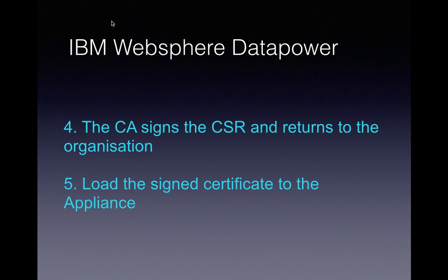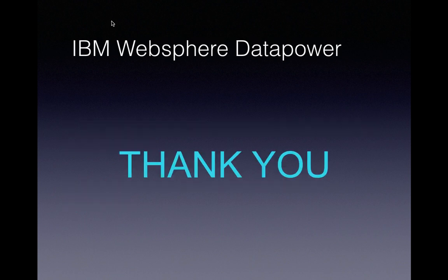Once the CSR is provided to the CA, the CA signs the CSR and returns it back to the organization. After it is returned, the signed certificates are then loaded into the appliance. This is the process for generating a key and certificate. Thanks for watching — in the next video we will see a short introduction on XML manager.